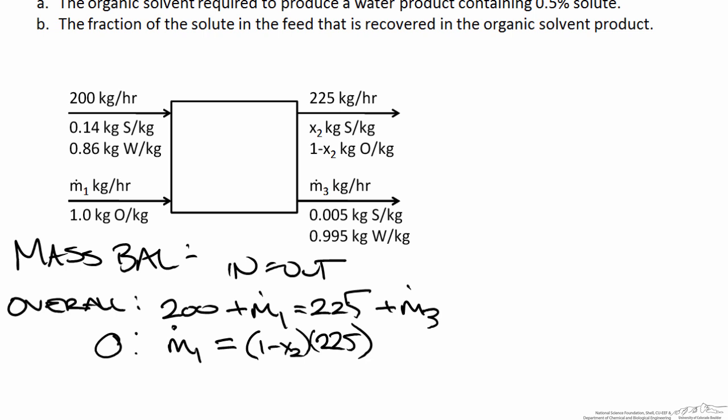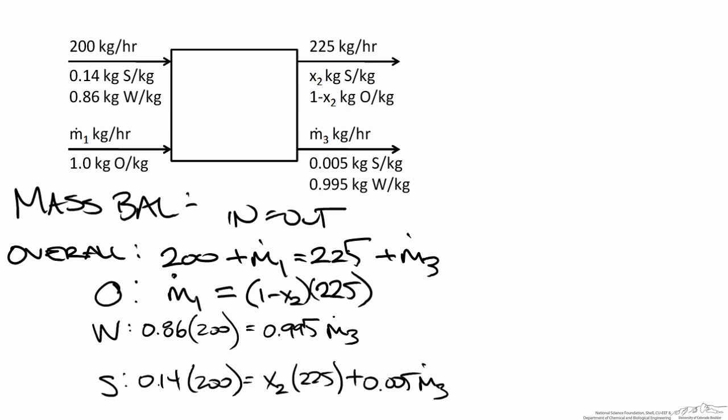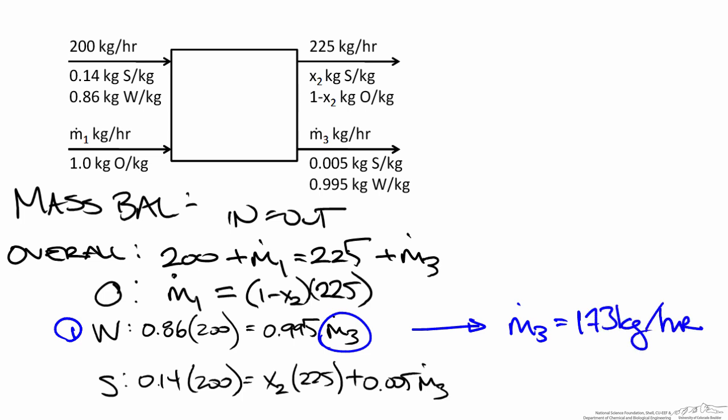Looking at the organic solvent balance, we can see we've introduced another variable x2, so we'll need one of the other two balances — either S or water. I'll quickly write both so we can see which is easiest to use. Looking at the water balance, we can quickly calculate M3. Doing the calculation, I find M3 is equal to 173 kilograms per hour. With a value of M3, we can plug that into the overall balance and solve for M1 — the first thing we were asked for. Rearranging the overall balance gives M1 equal to 198 kilograms of organic solvent per hour.